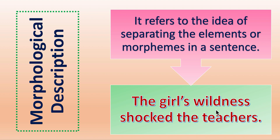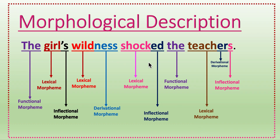For example, the sentence: 'The girl's wildness shocked the teachers.' Look here at the morphological description. 'The' is a functional morpheme; 'girl' is a lexical morpheme; apostrophe-s is an inflectional morpheme; 'wild' is a lexical morpheme; '-ness' is a derivational morpheme; 'shock' is a lexical morpheme; '-ed' is an inflectional morpheme; 'the' is a functional morpheme; 'teach' is a lexical morpheme; '-er' is a derivational morpheme; and '-s' is an inflectional morpheme.